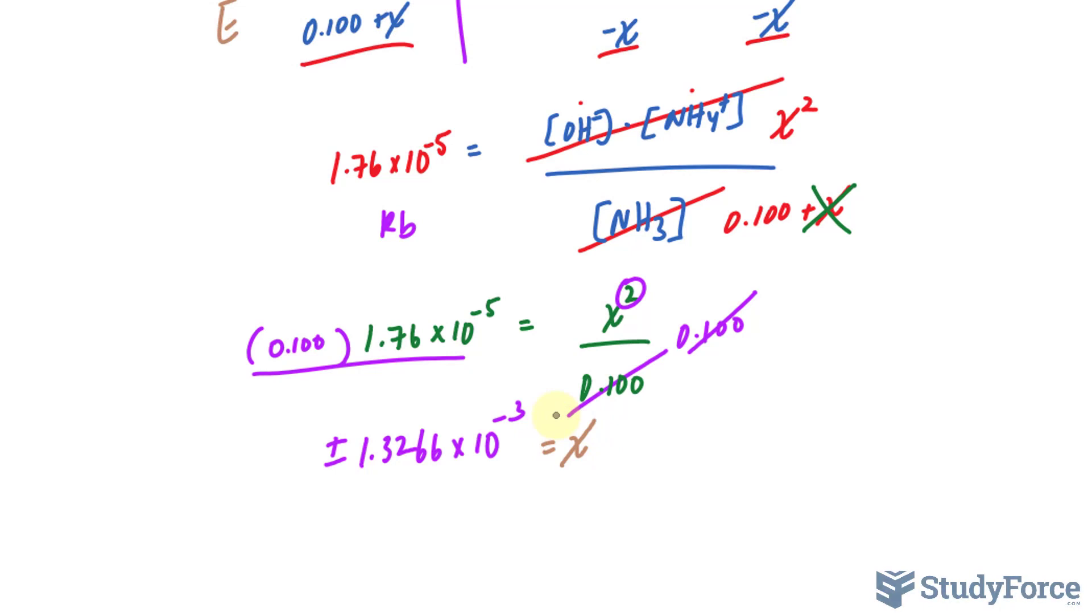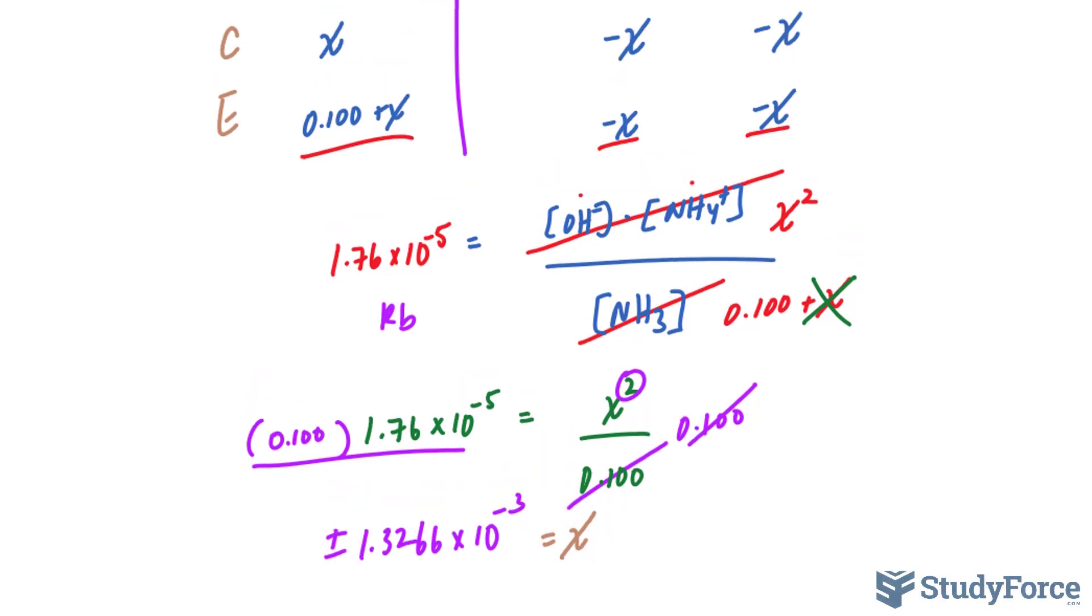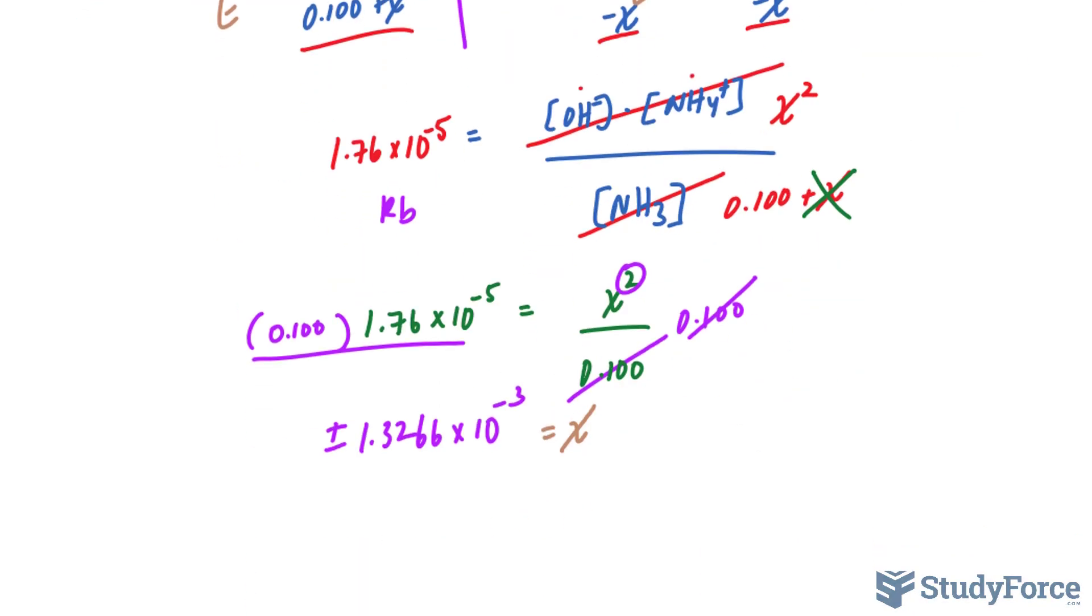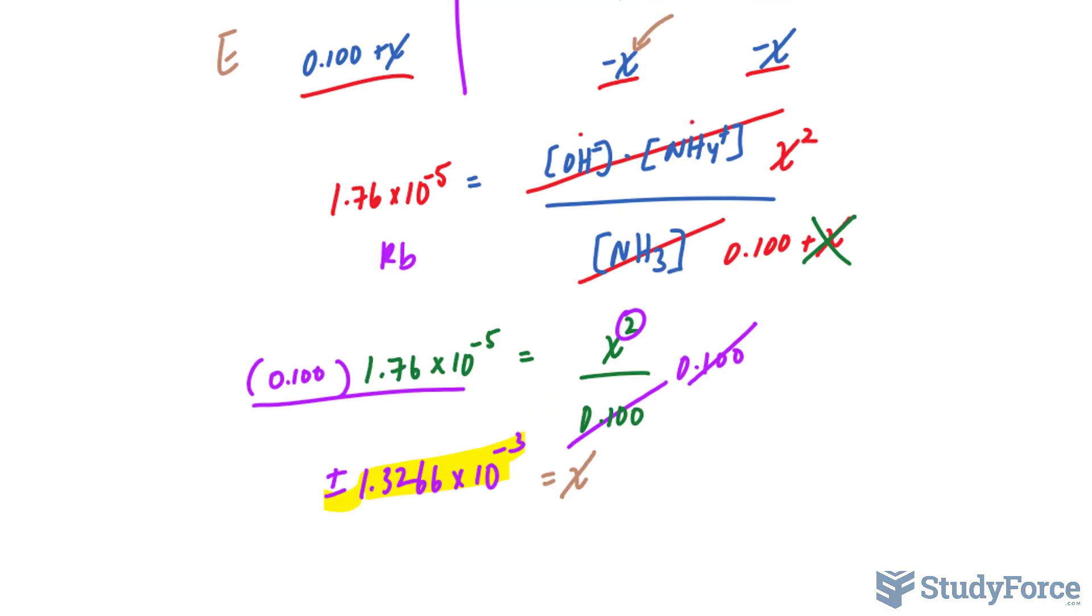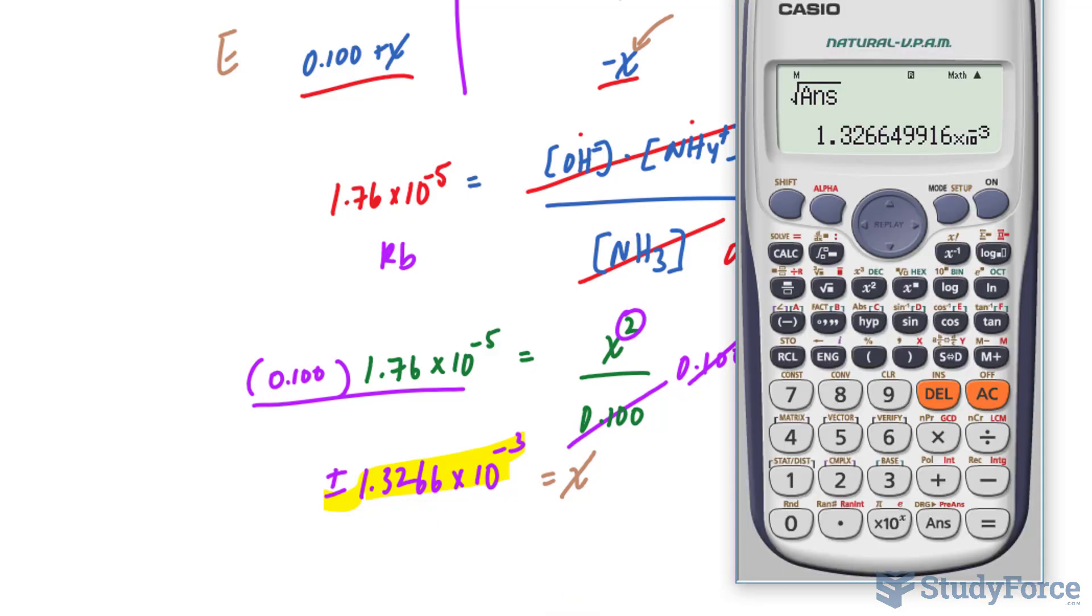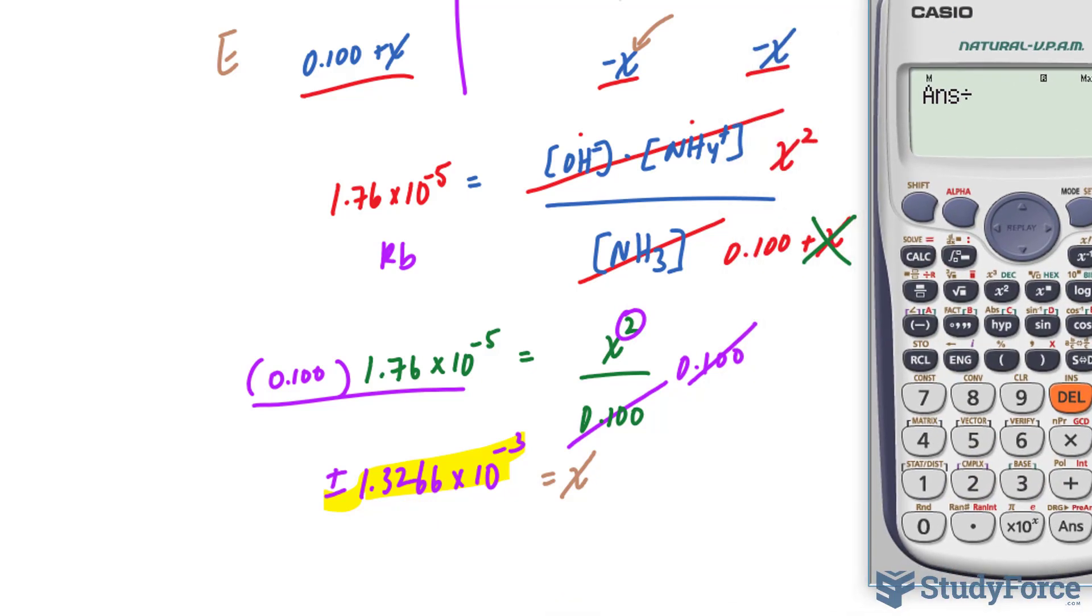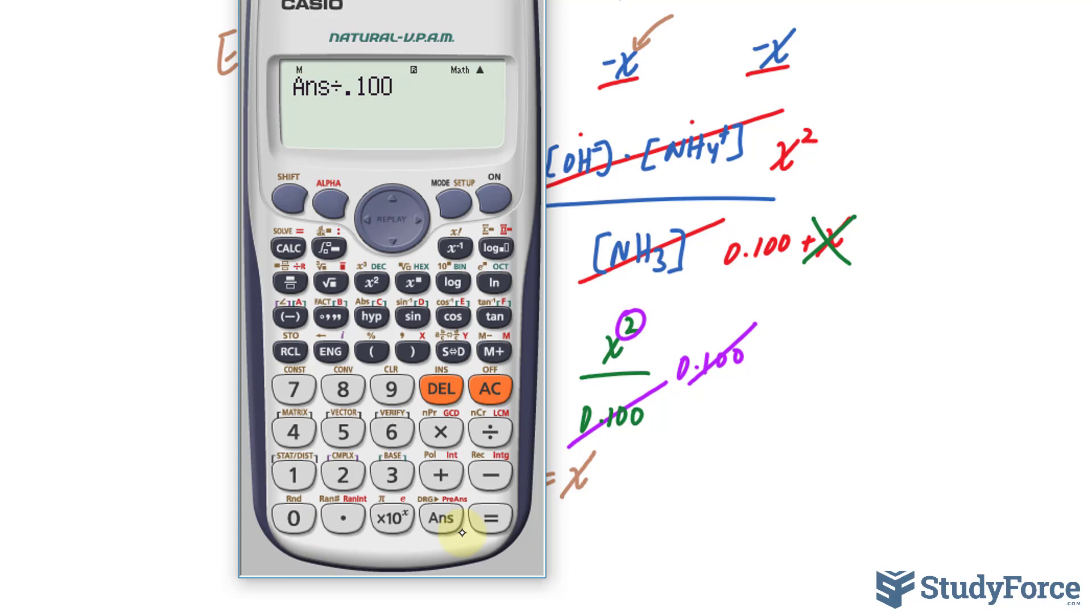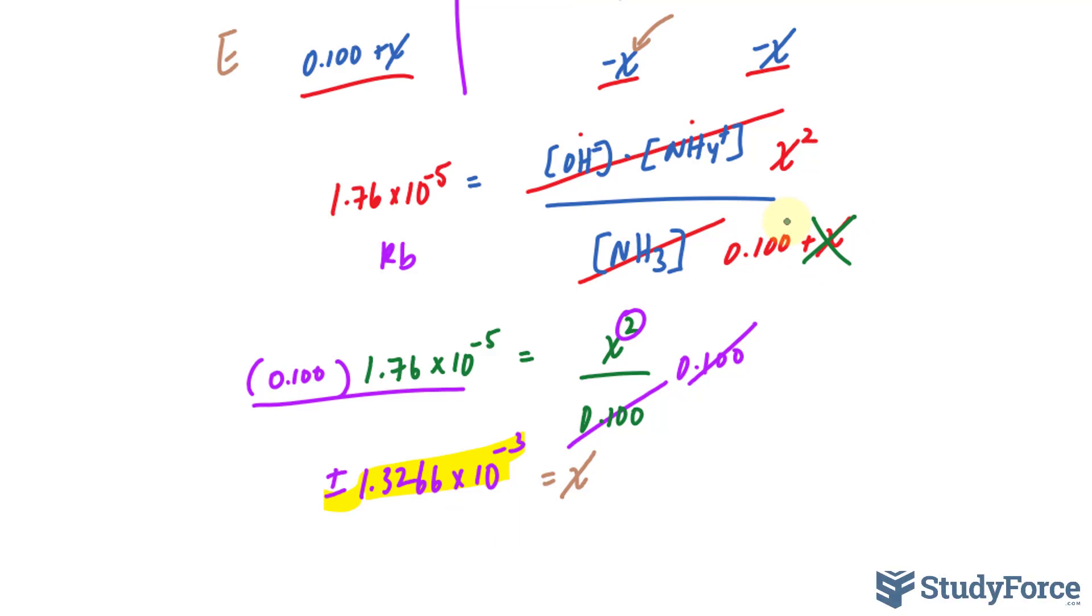So how do we decide which one is correct? The positive or the negative version? Well, if we choose the positive version and substitute it into here, we'll end up with a negative value for the equilibrium concentration. And that's wrong. So it has to be the negative version. Now, we also made the assumption that since KB is really small, we can get rid of X. To see if that assumption is the correct assumption, I'll take this number, the positive version, and divide it by what it was being added to, which was 0.100. And I'll find its percentage. If the percentage is less than 5, then I've made the right decision to get rid of X. Multiply that by 100%, and we end up with 1.32. That's less than 5%, so the assumption to get rid of this X was a good one.